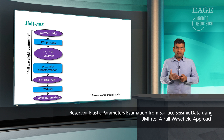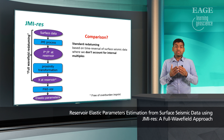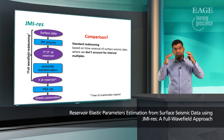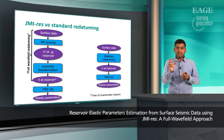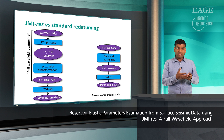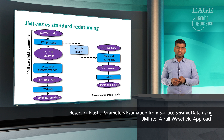To compare results, I will also estimate local impulse responses using standard redatuming, which is based on time reversal of surface seismic data and does not account for higher-order scattering or internal multiples. I will then apply the same local inversion as in JMI-RIS to estimate elastic parameters from the standard redatuming impulse responses. This comparison will show that the elastic parameters and local impulse responses from JMI-RIS are of much higher resolution. To make the comparison fair, we will use the same velocity model estimated in JMI for the standard redatuming case.